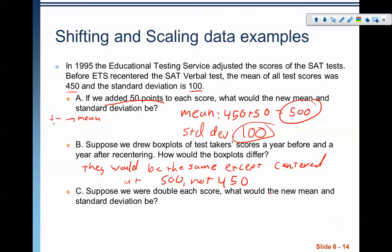Part C: suppose we double each score. What would the new mean and standard deviation be? If we doubled it, it would be 450 times 2, so 900 would be my mean. My standard deviation would be 100 times 2, which is 200. We're multiplying by 2 now. Multiplication and division here influences both mean and standard deviation. So it's influencing both mean and standard deviation in this case.